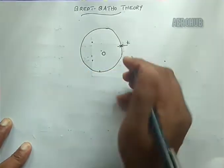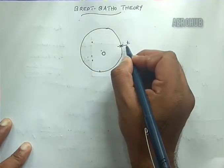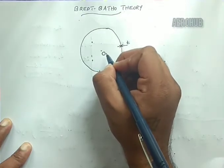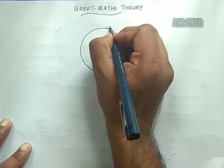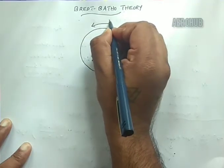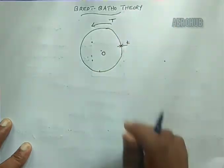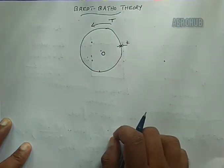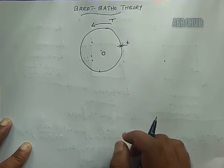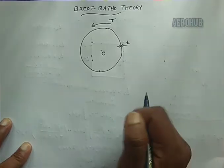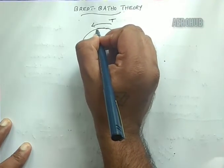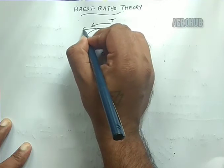In this section we have a circular thin-walled section having a thickness of small t, and the center is denoted as capital O. I am applying a torque — a twisting moment of capital T — to this section. Under the action of this twisting moment, the shear stresses will be parallel to the section boundary, since the thickness is very small.